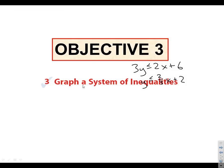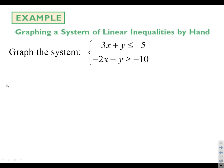Okay. Graph a system of inequalities. Now what happens if we have multiple lines here? Okay. We'll do it first by hand and then with the calculator. Equation 1, I'm going to get by itself. Y is less than or equal to negative 3x plus 5. And equation 2, same thing. Y is greater than or equal to 2x minus 10.